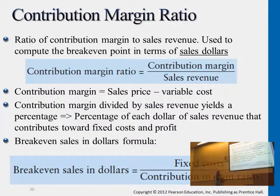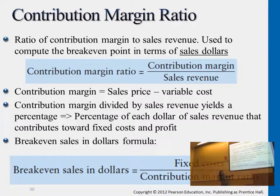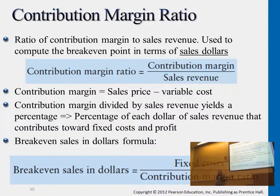So let's understand this. The contribution margin ratio is 0.6. This means for every dollar of sales generated from customers, we're getting 60 cents of contribution margin. For $2, we're getting $1.20. For $3, $1.80. For $4, $2.40.